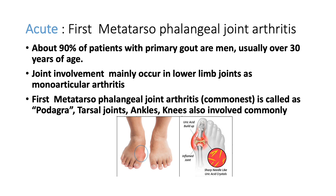The commonest presentation is first metatarsophalangeal joint arthritis. About 90% of patients with primary gout are male, normally over 30 years of age, though younger individuals can also present with gout. Joint involvement is mainly seen in the lower limbs — particularly the first metatarsophalangeal joint, which is called podagra. Gout will never present as symmetrical arthritis; it is mostly asymmetrical or monoarticular.